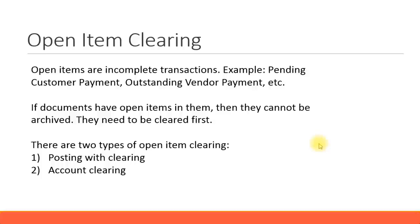Archiving means the data space consumed in the system will be reduced, so you will have more space on the server for future documents. If documents still have open items, those documents cannot be archived. Now let's look at the two types of open item clearing: posting with clearing and account clearing. We'll look at this in more detail in the next slide.